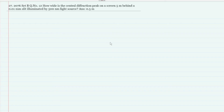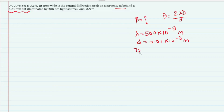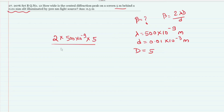How wide is the central diffraction peak? The central diffraction peak width formula is 2λD divided by d. We have λ = 450 nm = 450 × 10⁻⁹ m, slit d = 0.01 mm = 0.01 × 10⁻³ m, and the screen distance D = 5 meters. Calculating this gives approximately 0.45 meters.